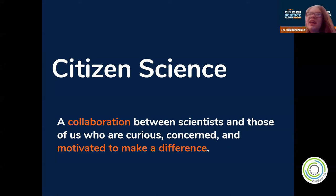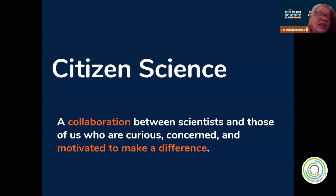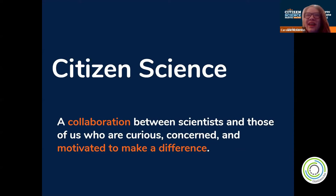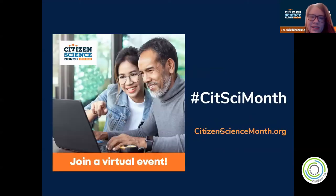That can be everything from taking an observation through iNaturalist — which you'll learn about later today — and contributing to a global record of biodiversity, to doing a project like Stall Catchers, one of our featured Citizen Science Month projects, where you classify blood vessels and speed up the search for a cure to Alzheimer's disease, completely from your computer at home. Citizen science is really diverse — from astronomy to zoology, every discipline of science. It exists because there are certain types of research that scientists can't do without you.